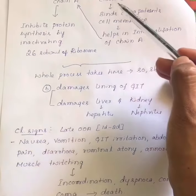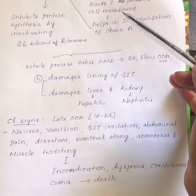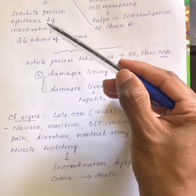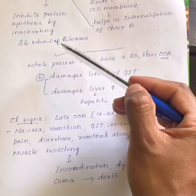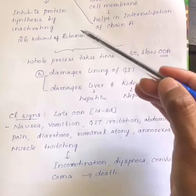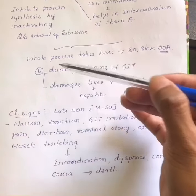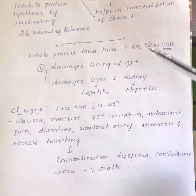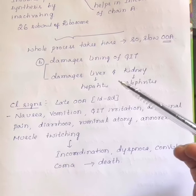The mechanism of action of abrin: abrin has two chains, chain A and chain B. Chain B binds to the host cell membrane and helps in the internalization of chain A. Once chain A gets inside, it inhibits protein synthesis by inactivating the 26S subunit of the ribosome. Because this process — inactivating the ribosome and then inhibiting protein synthesis — takes time, the onset of action in abrin toxicity is slow. The second mechanism is that it damages the lining of the gastrointestinal tract and also damages the liver and kidney, leading to hepatitis and nephritis.